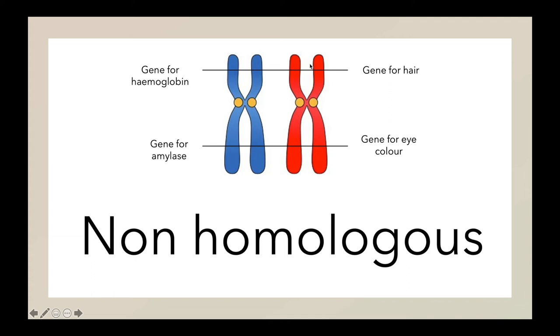The same goes for this location. At this location in this chromosome, it contains the gene for amylase, meanwhile at the same location in this chromosome, it contains the gene for eye color.